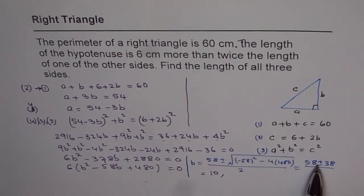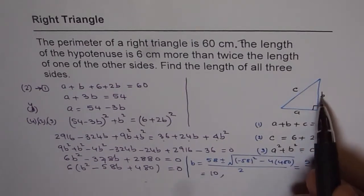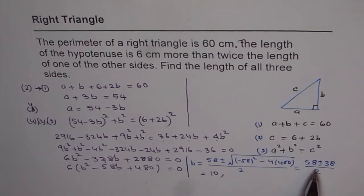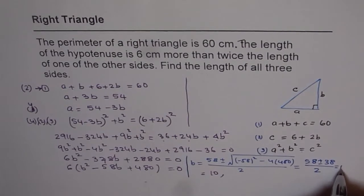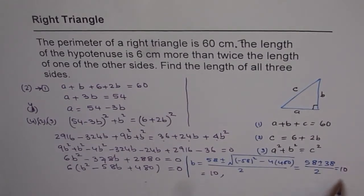Now b is a smaller side, so we cannot really get 48 as one of the answers because then 48 is going to be much larger. So 10 is the right answer for us, we will ignore 48.